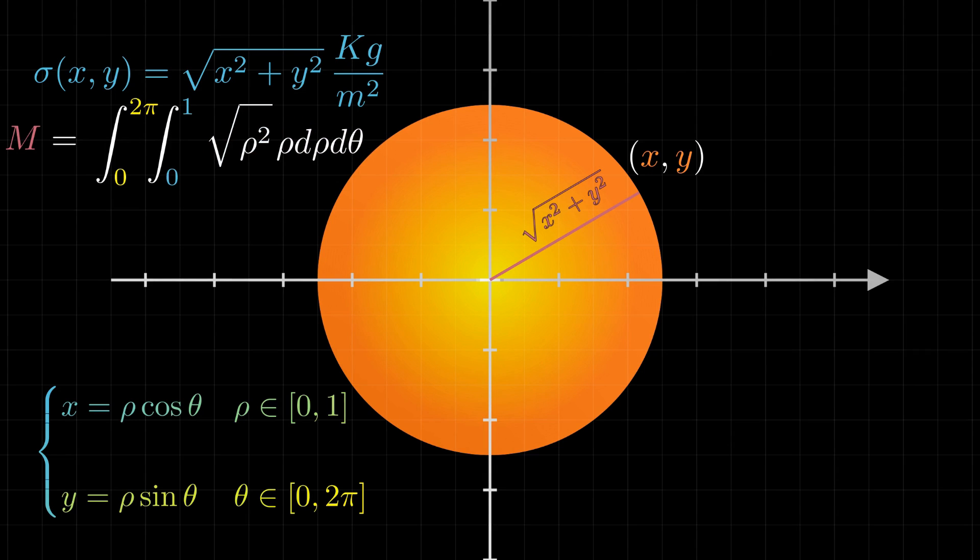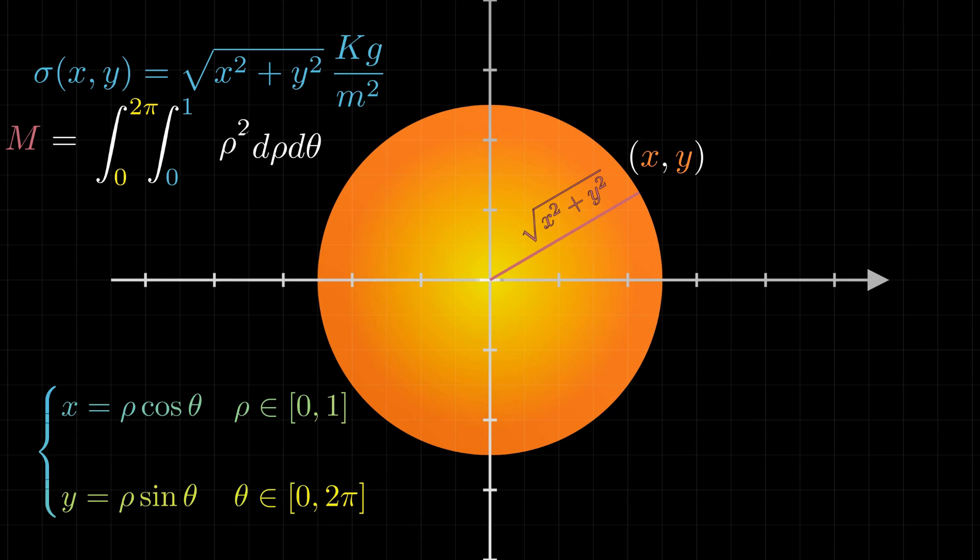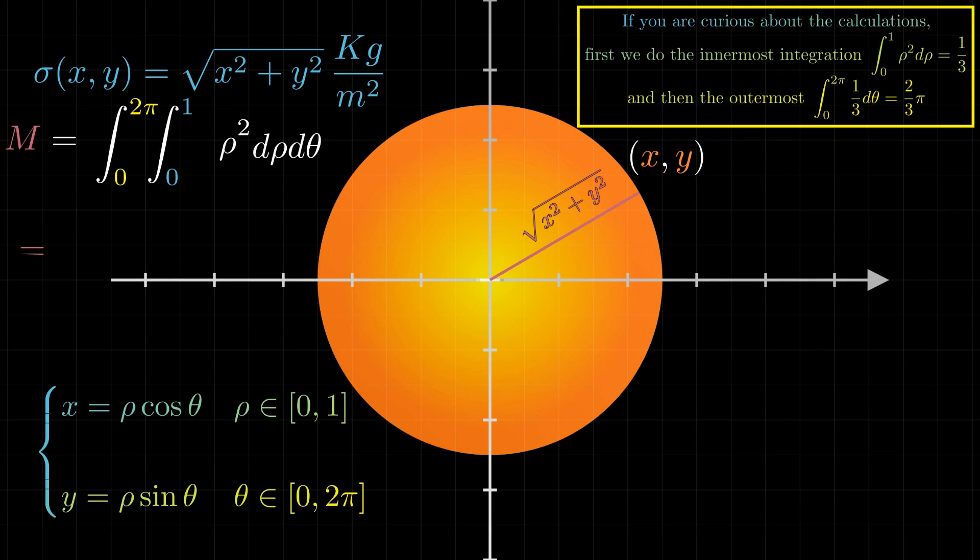And so, to find the mass, we can sum all of the values of sigma times ds, and therefore integrate the density function over this metal plate. Since this is a circular domain, we can make a change of coordinates, multiply by the Jacobian, and then, after a very few calculation, see that our plate has a mass of two-thirds of Pi, which is approximately 2.09 kilos.